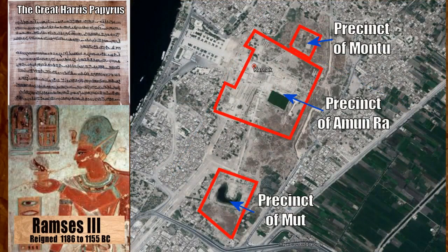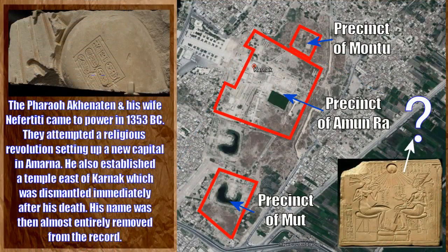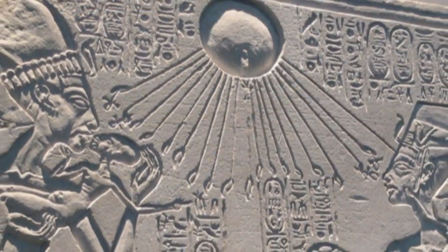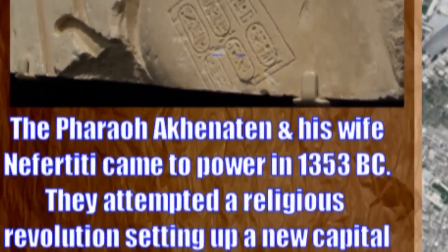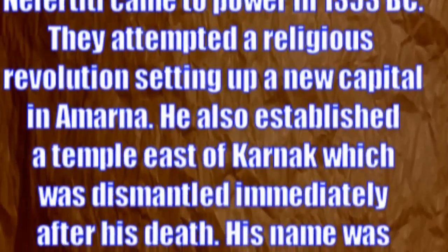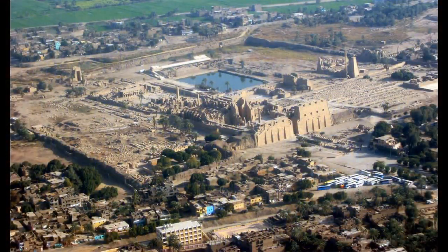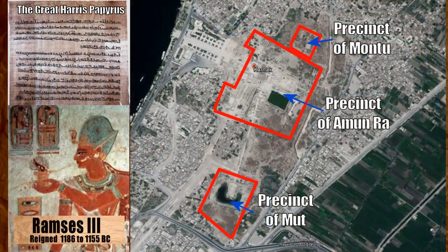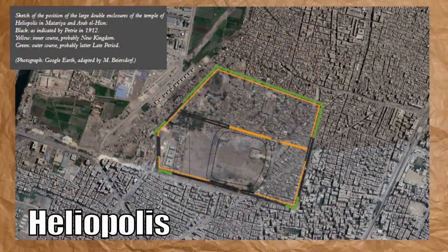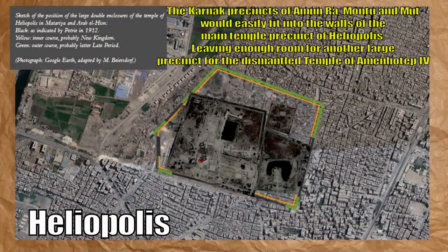The temple precinct of Amun-Ra at Karnak is the largest precinct open to the public. To the north and south there are two smaller precincts — Montu to the north and Mut to the south. A fourth precinct to the east, built by the heretic pharaoh Akhenaten, was dismantled soon after his death and his name systematically removed from the record, with only a few traces remaining to suggest that he or his wife Nefertiti even existed in the 14th century BC. Said to be the largest temple complex in ancient Egypt, Karnak is in fact the second largest — for if the precincts of Amun-Ra, Montu, and Mut were placed inside the enclosure walls of Heliopolis, enough room would remain for yet another large temple precinct.